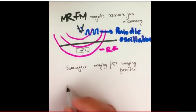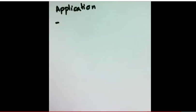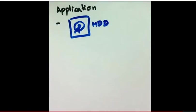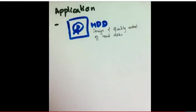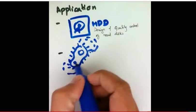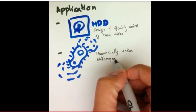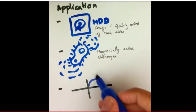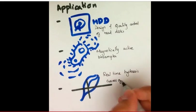The MFM technique has a wide range of applications. It is used by magnetic disk manufacturers for the design and quality control of hard disks. Also, MFM finds applications in studying magnetically active biophysical samples and superconductors. Real-time hysteresis curves of nanostructures and magnetic inclusions on a surface can also be obtained using MFM.